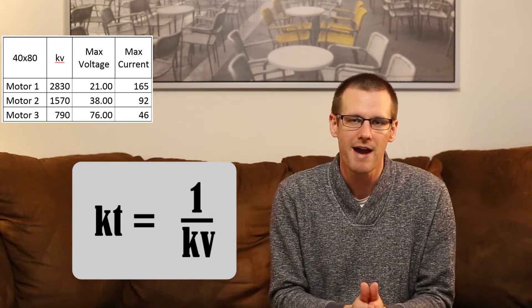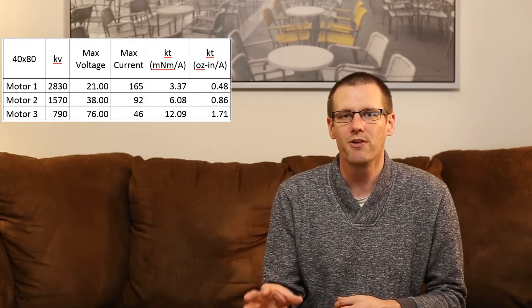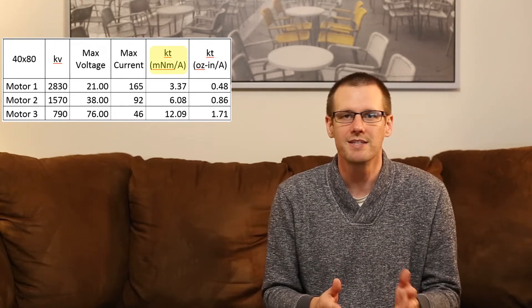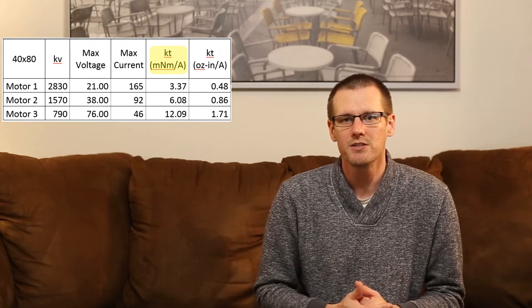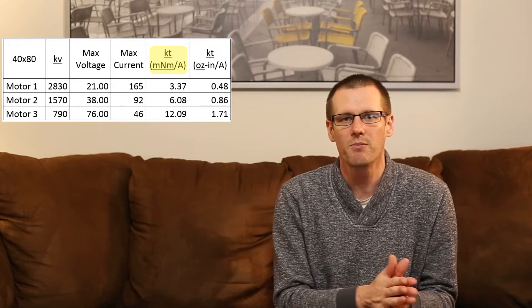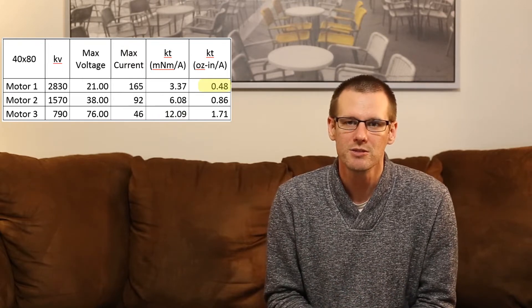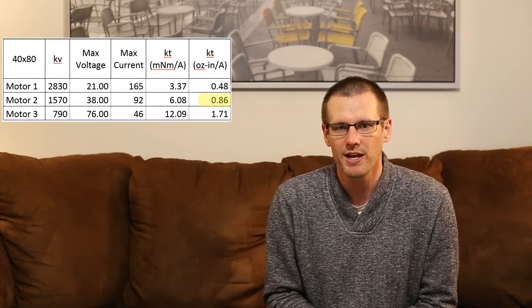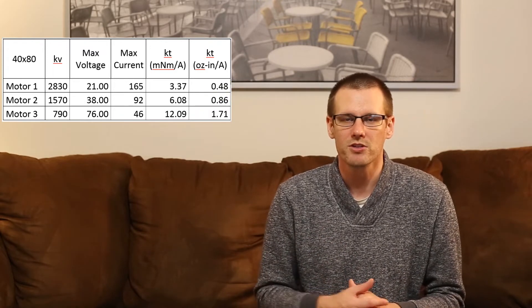So I've gone ahead and done that math for us. The KT values that we're going to talk about today is in two different units, for those that like the Imperial system and those who prefer SI. I personally prefer the SI. So KT in millinewton meters per amp is going to be represented by motor number one at 3.37, two at 6.08, and the last one there at 12.09. Now for those that like the ounce inches per amp, those are at 0.48, 0.86, and 1.71. So those are the KT values for those brushless motors.